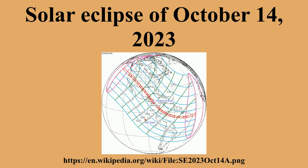This will be the second annular eclipse visible from Albuquerque in 11 years, where it crosses the path of the May 2012 eclipse.